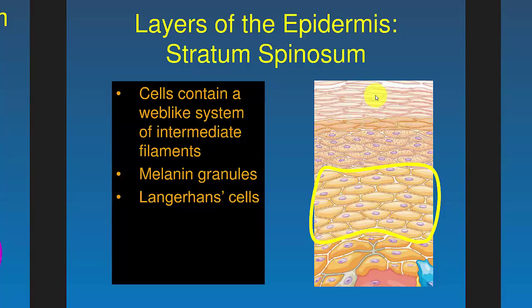The next layer up is the stratum spinosum, or spiny layer. It has cells that are really quite spiny, which is why it's called the spinosum. Melanin granules are found here, and this is also where the Langerhans cells hang out.